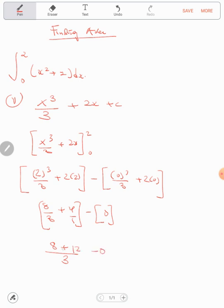Minus zero. So twelve, eight plus twelve you get twenty divided by three minus zero. Twenty over three minus zero is just the same as twenty over three.